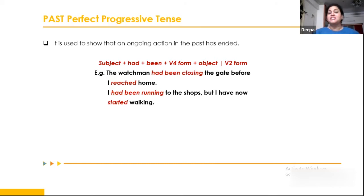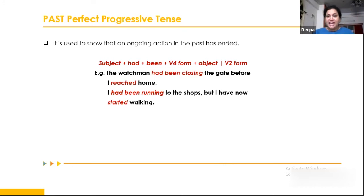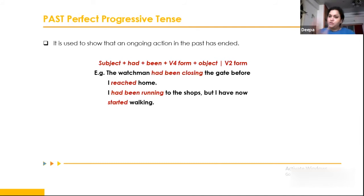Past perfect progressive tense also requires two actions — they are mandatory. It describes an ongoing action in the past that ended because of a second action. For example: 'The watchman had been closing the gate before I reached home since last week.' 'I had been running to the shops but I have now started walking' — the running stopped because of the walking starting.